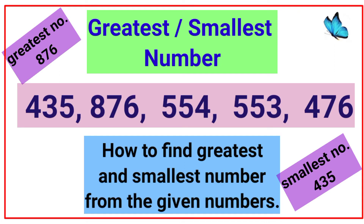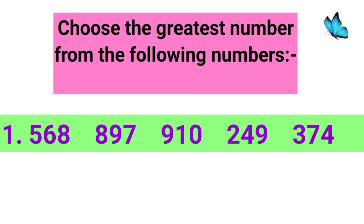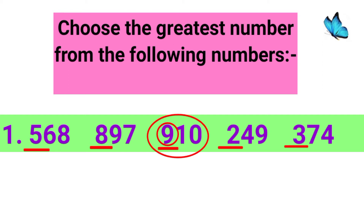Greatest and smallest number. Choose the greatest number from the following numbers. Children, here you can see a list of numbers. From these numbers you have to find out the greatest number. All the digits in all the numbers are different, so you have to look at the first digit of the numbers. The first digits are 5, 8, 9, 2 and 3. From all these digits you have to find out the greatest digit. The greatest digit is 9, so the greatest number will be 910.